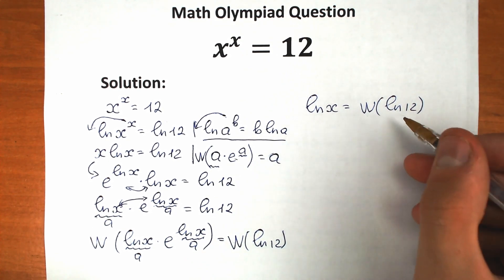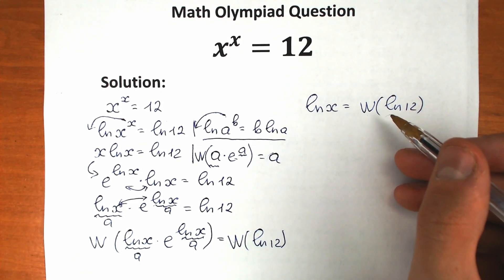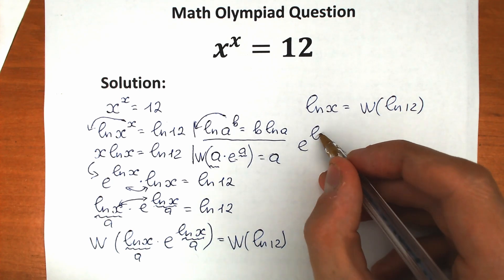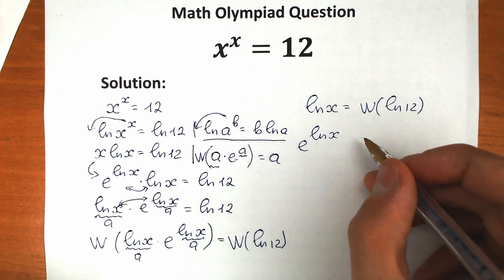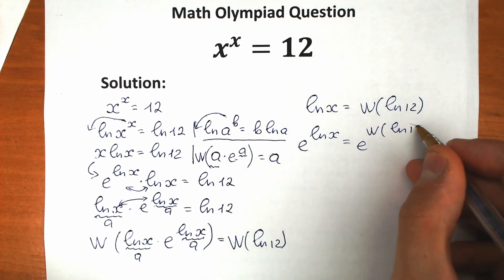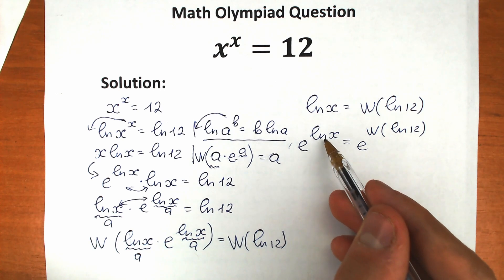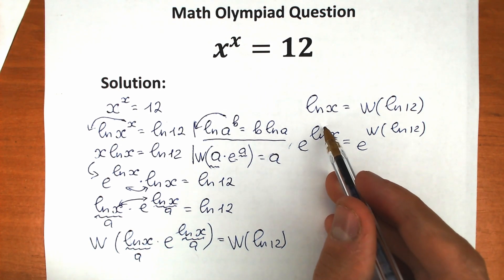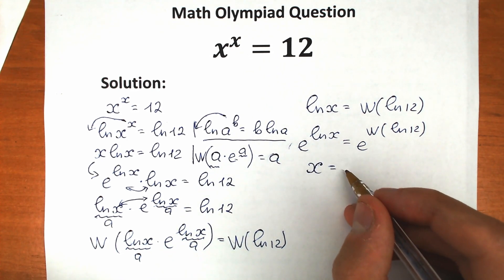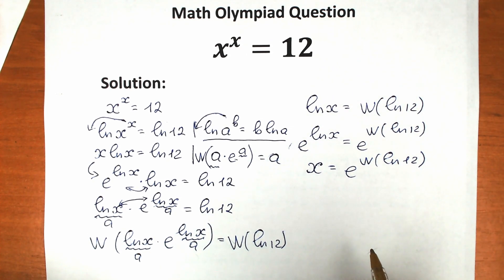This right-hand side is a constant that you can evaluate using any online tool. To isolate x, we apply e as a base on both sides. On the left, e^(ln x) simplifies to x by the log cancellation property. So our final answer is x = e^(W(ln(12))). This is the exact general answer for the challenge.